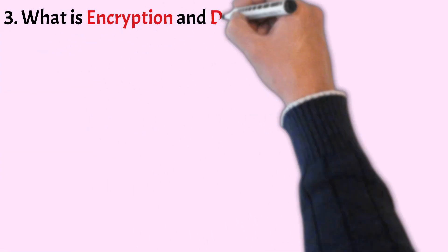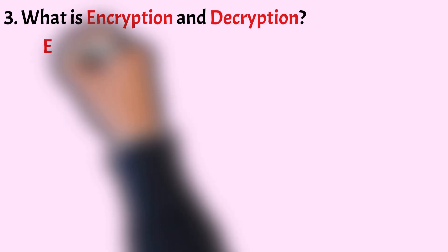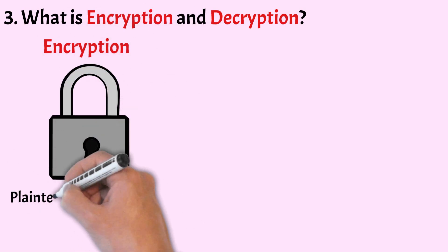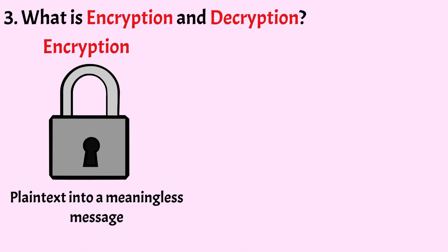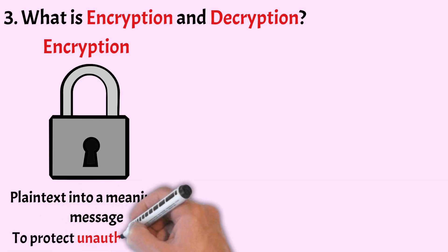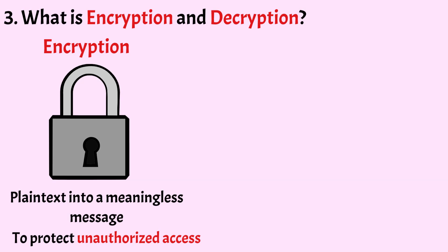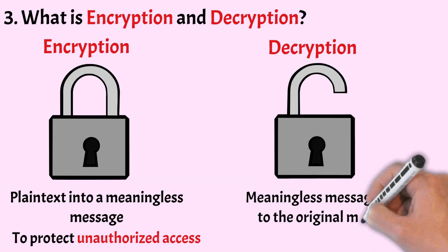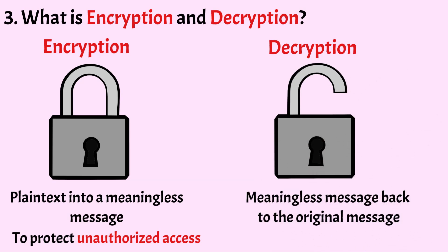What is encryption and decryption? Encryption is the process of converting a message or plain text into a meaningless message that doesn't make any sense. It hides the information's true meaning, and this is done to protect privacy of the message from unauthorized access. Decryption is the process of converting a meaningless message back to the original message. It is a reverse process of encryption and is also known as decoding encrypted data.